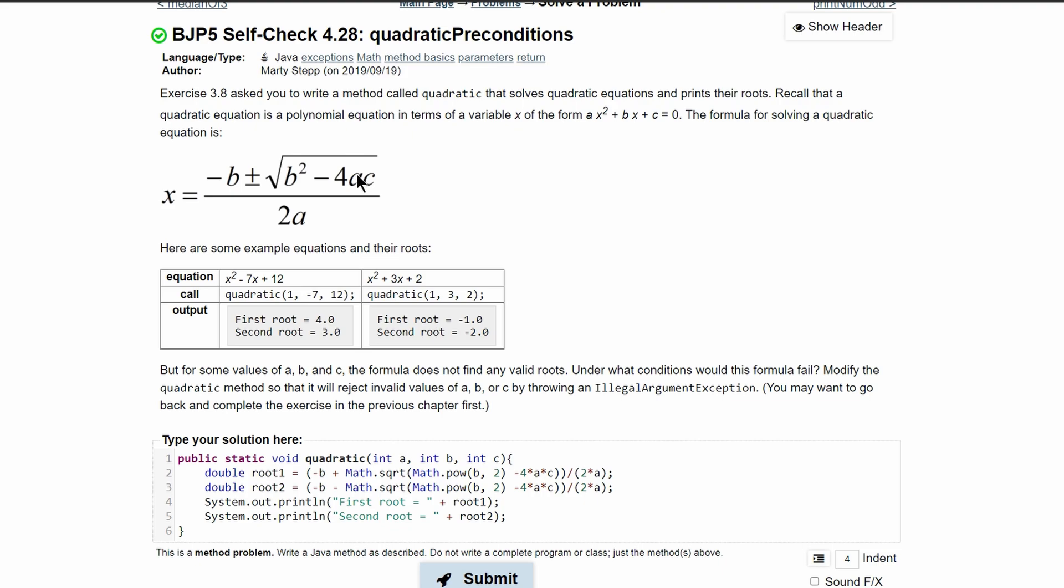Another thing we cannot have is if a is equal to zero, because if a is equal to zero, we will be dividing by zero, which is impossible. We can't do that. It will result in an error.